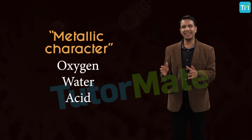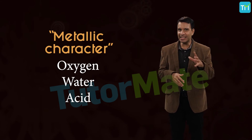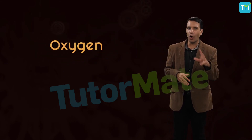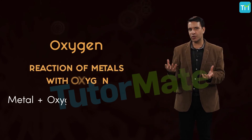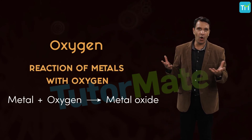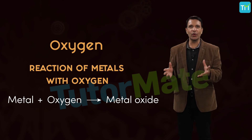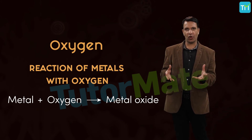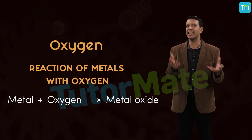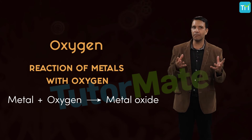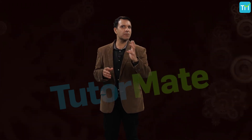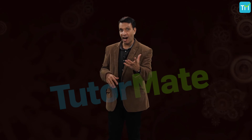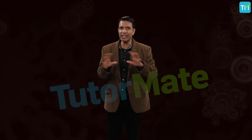Let's start with oxygen. When metals react with oxygen, we get metal oxides. We already know that metals readily lose electrons, and these are easily gained by oxygen, a non-metal element.